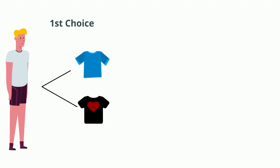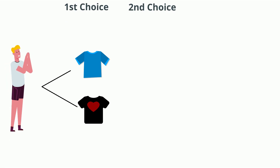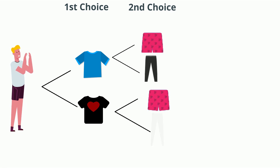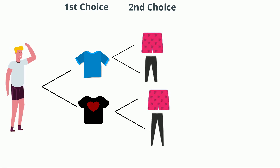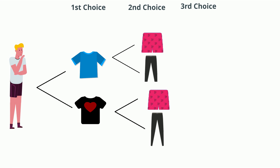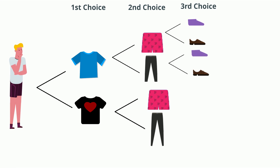Now he moves on to his second choice: short pants or long pants? Now the short pants are pretty colorful. And you can see how the tree diagram is set up. Now he moves on to his third choice, his footwear. Do I go with the purple running shoes or the brown shoes? And here's how the tree diagram will look.